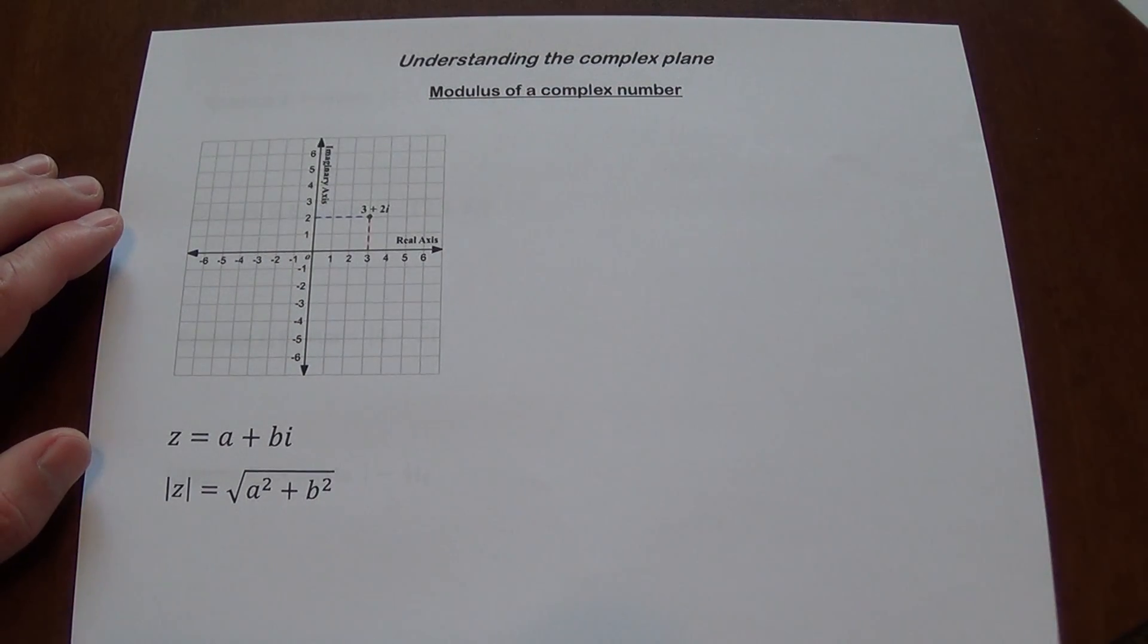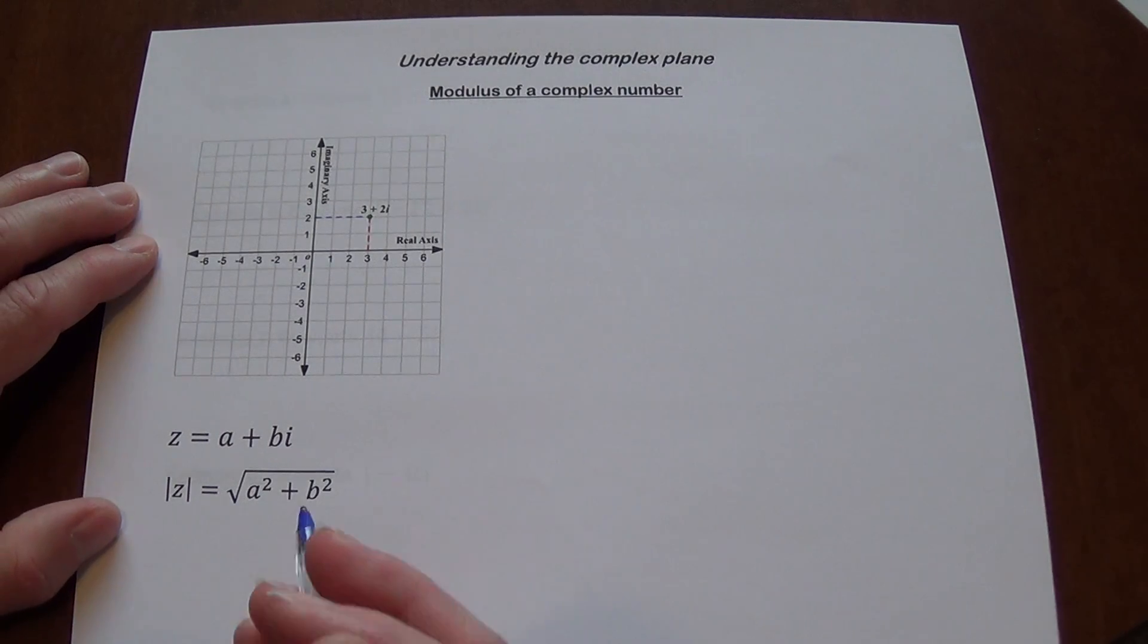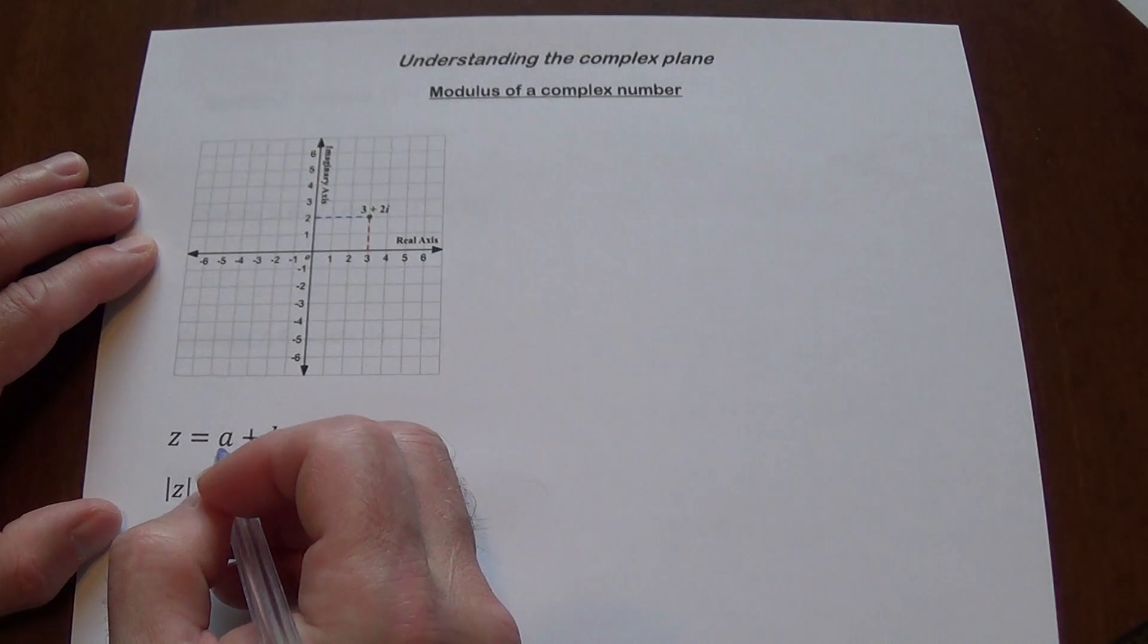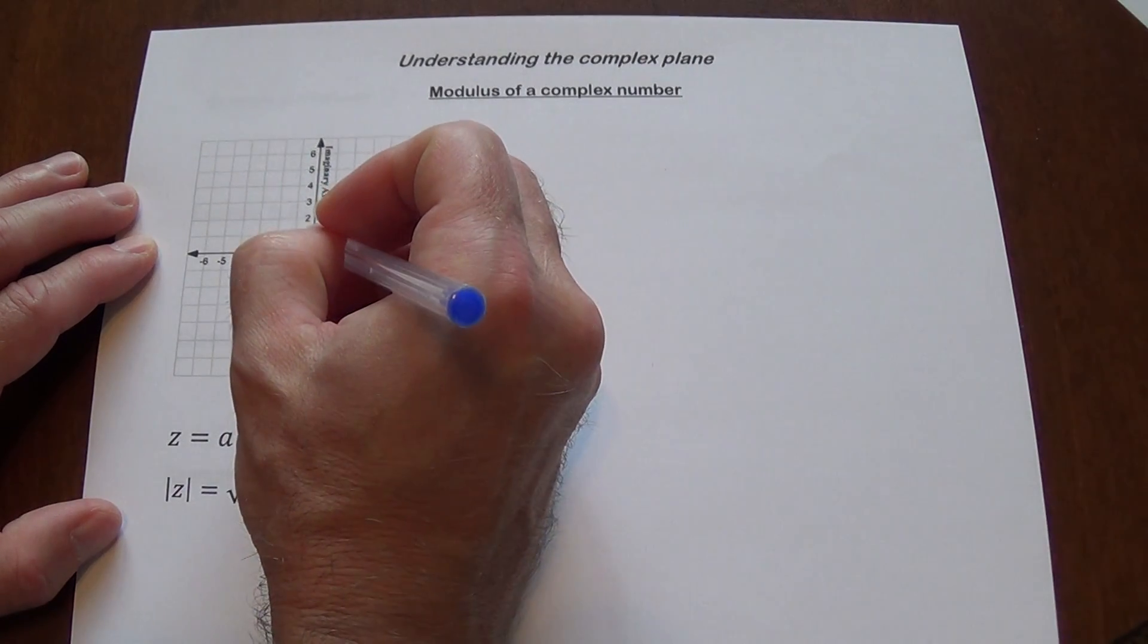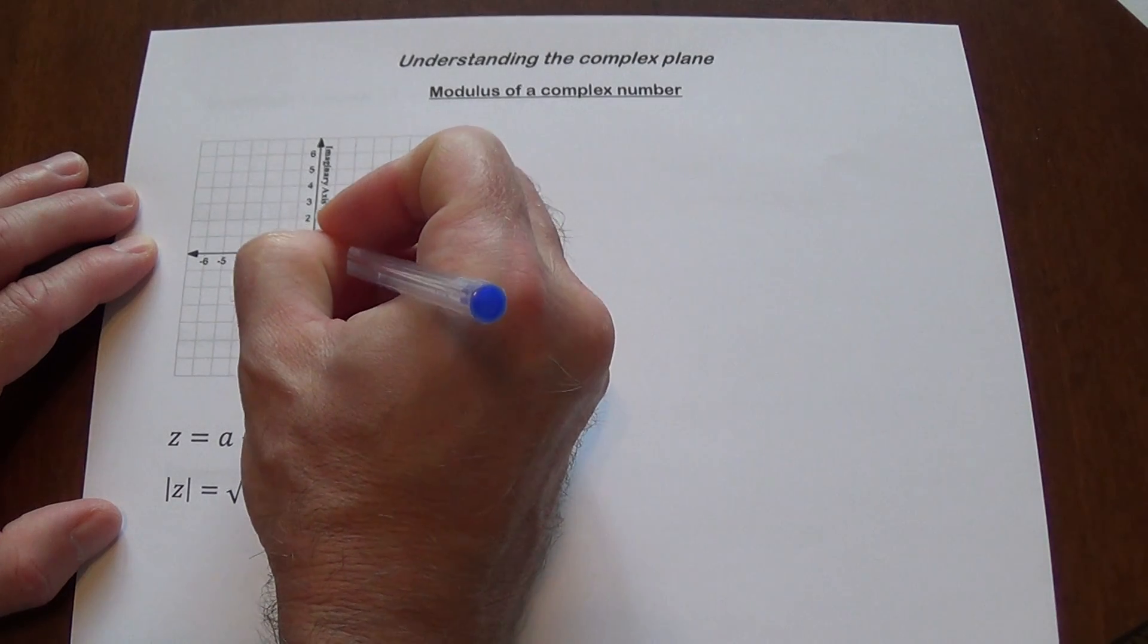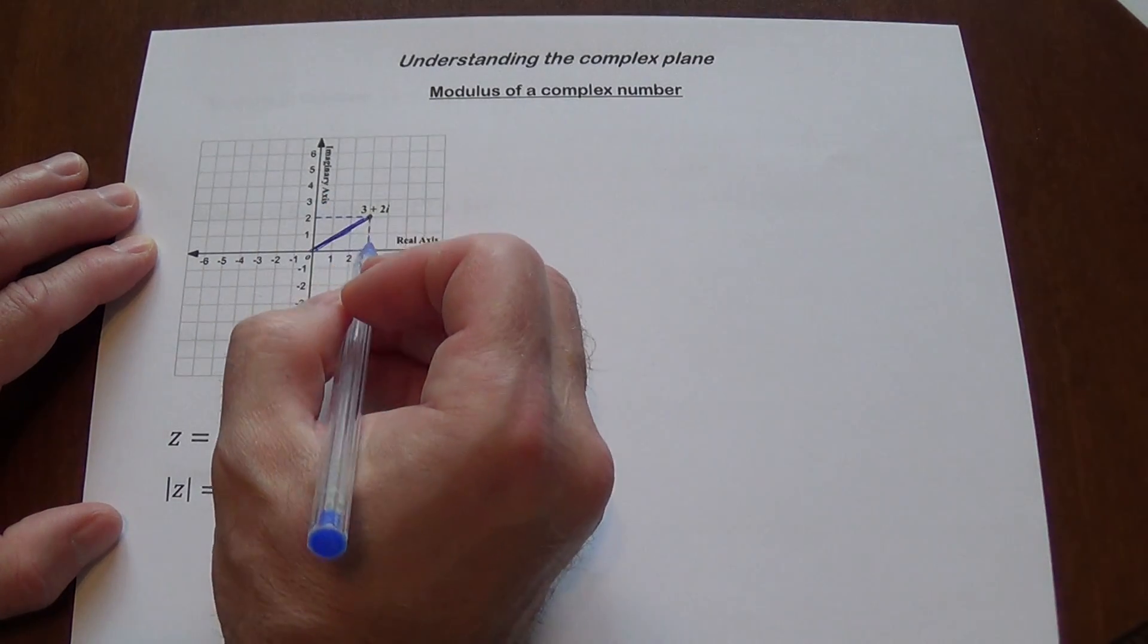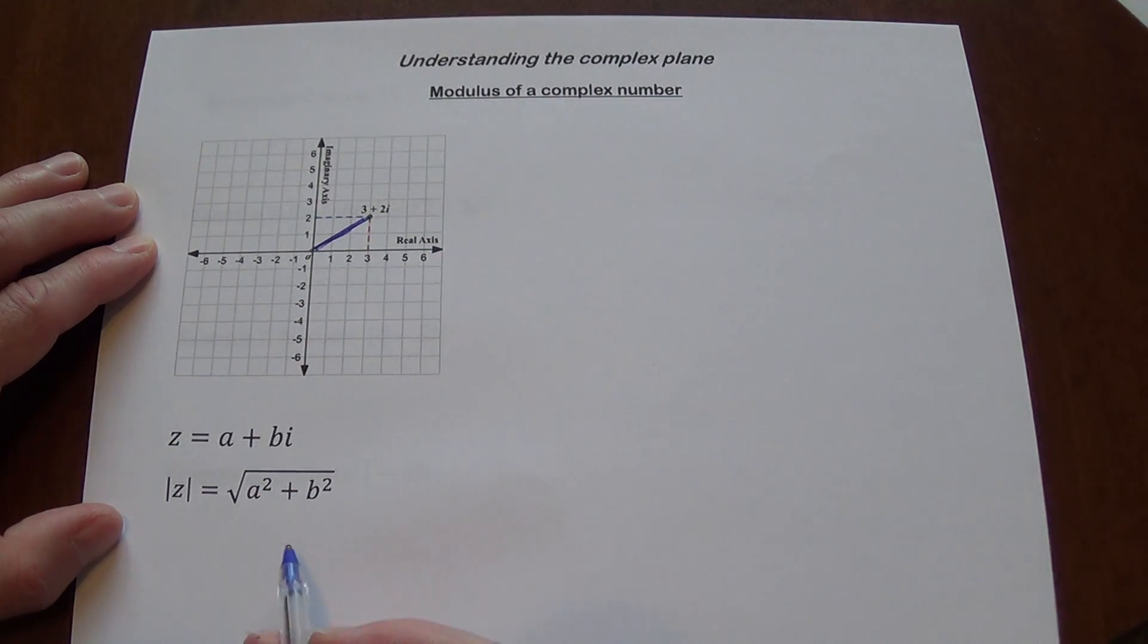There's something called modulus of a complex number. Modulus of a complex number is going to be actually the distance between the number and the origin here. So if you have a number right there, that's 3 plus 2i. This distance here is going to be the modulus. Now I hope you can see a right triangle here, which means the Pythagorean theorem will apply.